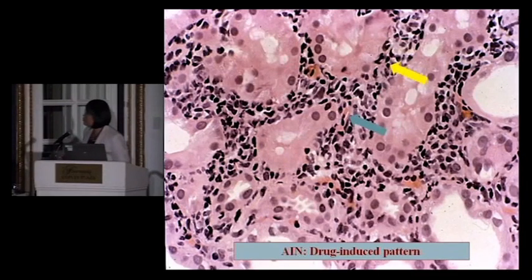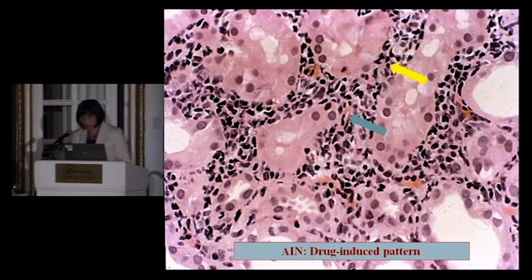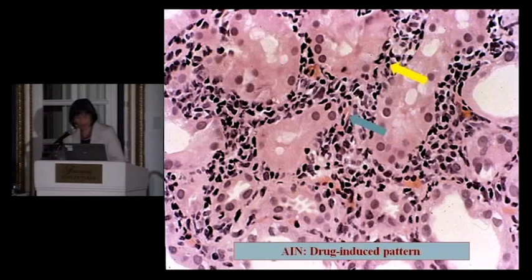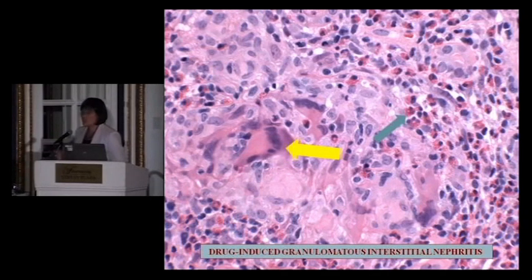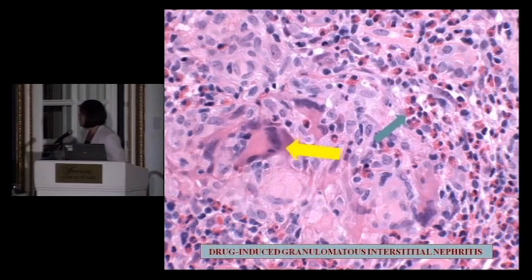This slide shows a lot of inflammatory cells in the interstitium with lymphocytes and eosinophilia — this is most commonly seen in drug-induced AIN. This is a drug-induced pattern. This next image shows a granuloma pattern with multinucleated giant cells as well as many inflammatory infiltrates in the interstitium. This pattern is also commonly seen in drug-induced AIN.